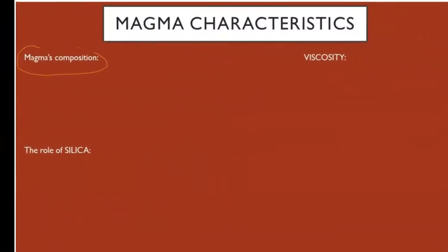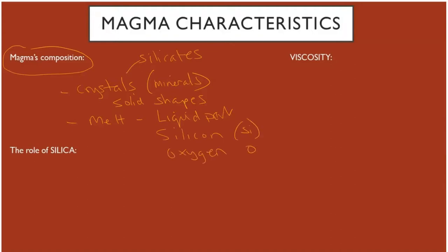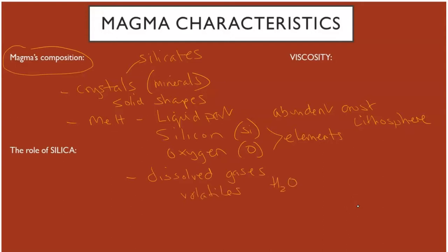So magma's composition. First we've got crystals — these are the minerals in various solid shapes and habits. We have the melt, which is the liquid part, and these are mostly silicates — the liquid silicon (Si) and oxygen. These elements are the most abundant in the crust and lithosphere. Then we have the dissolved gases, which are called volatiles, and these are mostly water vapor.